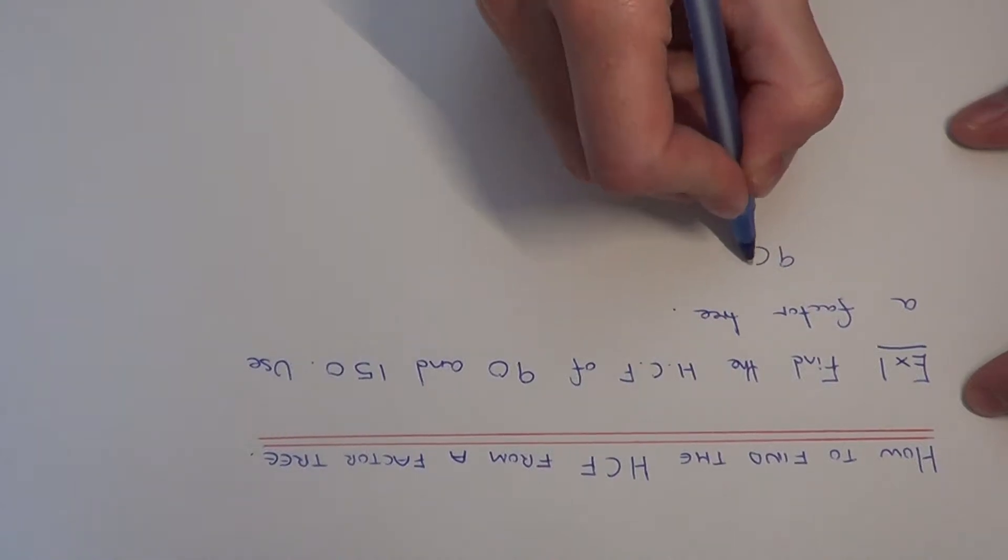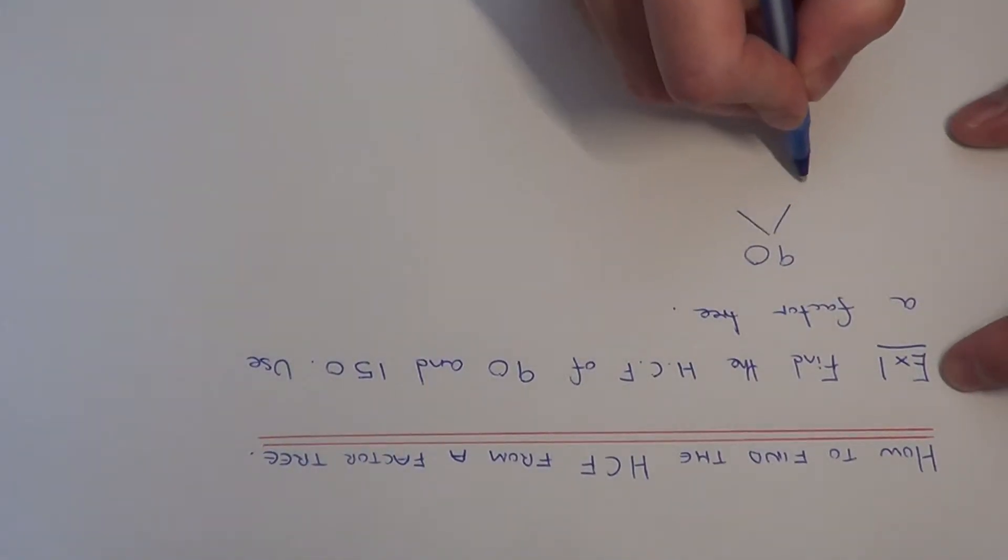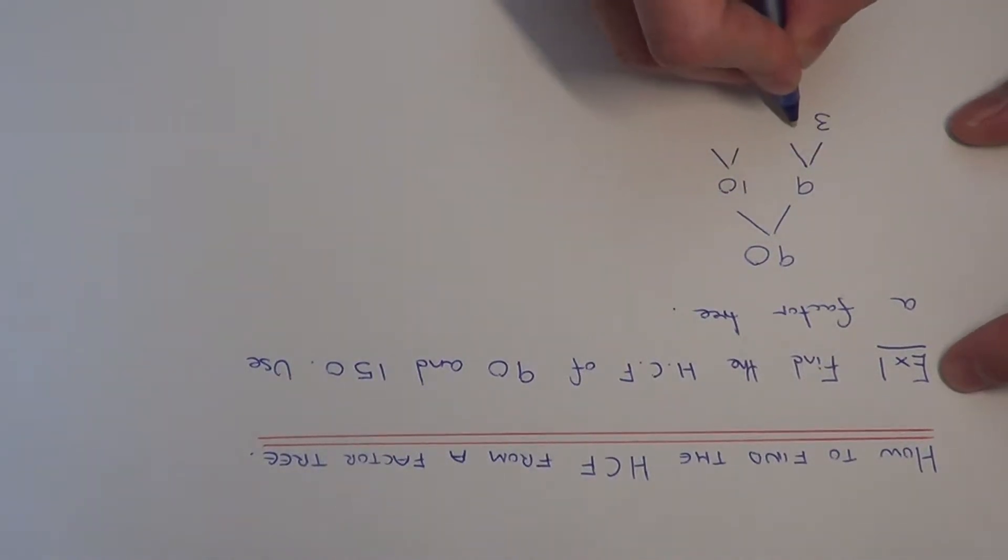First of all, let's do our factor tree for 90. We can split this up into 9 times 10. None of these are prime numbers so we can split these up again. 9 we can write as 3 times 3. Both of these are prime numbers so let's circle them.